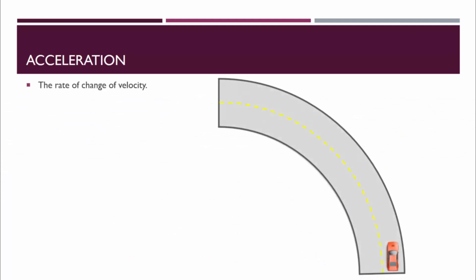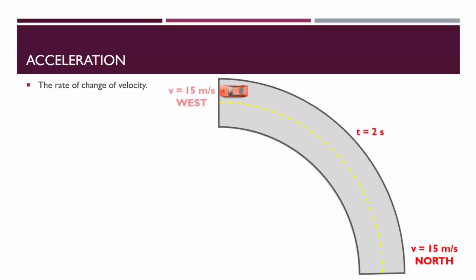Let's take a look at another example of acceleration. Here's a car that's going to travel around a circular track. It starts out traveling 15 meters per second north, and ends up traveling 15 meters per second west after 2 seconds. Since velocity is a vector, 15 meters per second west is different than 15 meters per second north. Therefore, we can say that the velocity changed.